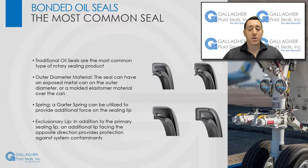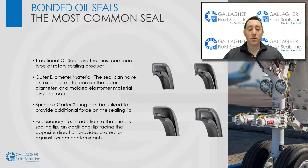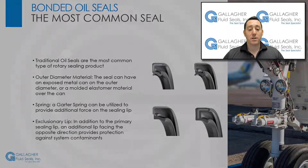Additionally, an exclusionary lip can be used in combination with the primary sealing lip facing the opposite direction, which provides protection against system contaminants. These features can be mixed and matched to provide a seal that matches an application need.